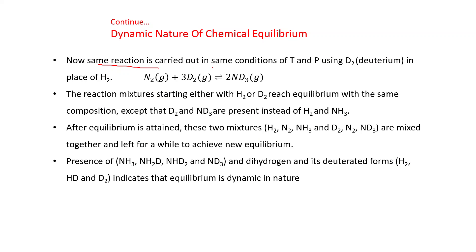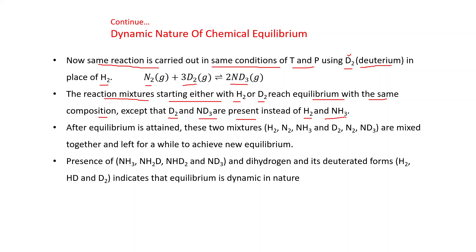Now the same reaction is carried out under the same conditions of temperature and pressure using D₂ (deuterium), which is an isotope of hydrogen, in place of H₂. The reaction becomes: N₂ + 3D₂ ⇌ 2ND₃. The reaction mixture starting with either H₂ or D₂ reaches equilibrium with the same composition, except that D₂ and ND₃ are present instead of H₂ and NH₃.